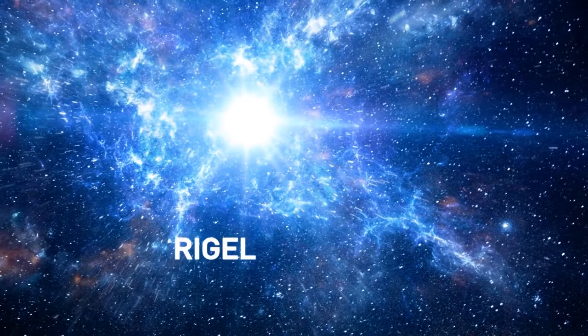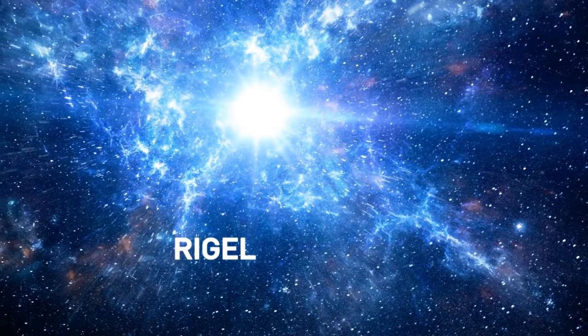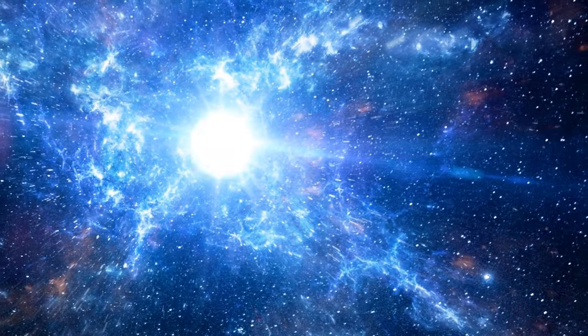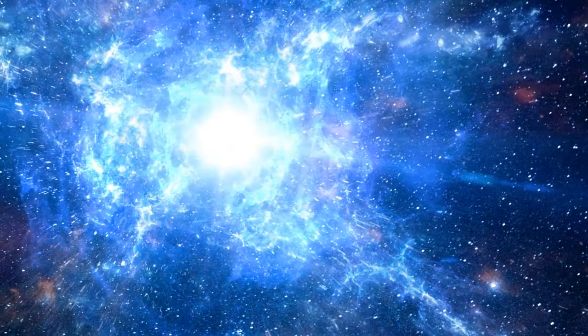Rigel's mass is 21 solar masses. In other words, it's 21 times more massive than our Sun. So, will Rigel go supernova or simply vanish into a black hole that it'll create in its core?